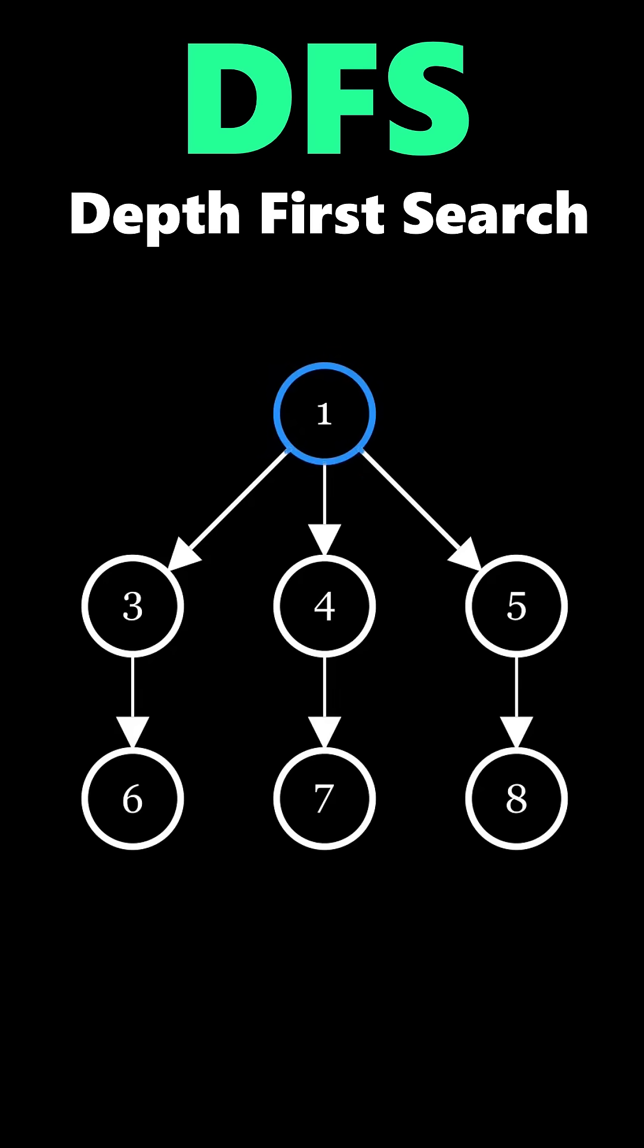The next step is to move along the edges from our starting point to other reachable nodes. How we pick what edge to another node we take first is dependent on the implementation. We'll keep it simple and pick the edge that goes to the node with the smallest value.